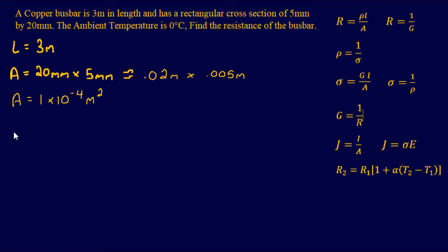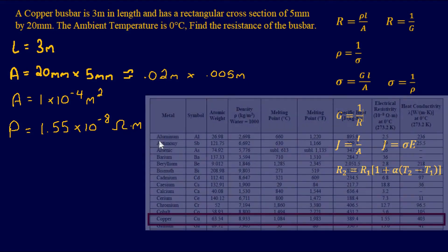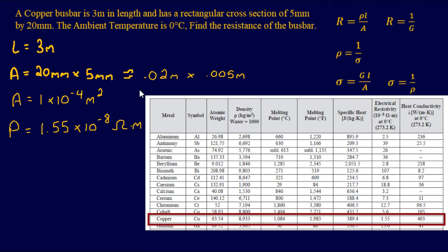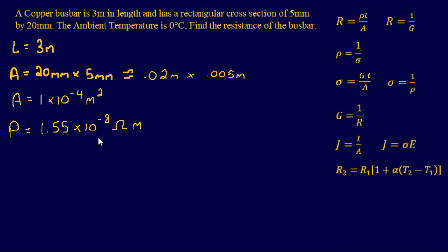From the FE manual, we find that the resistivity of copper at 0 degrees Celsius is 1.55×10⁻⁸ ohm-meters. Just to give you a heads up, resistivity may be given in most of your problems because it's not always the same from book to book — it's very close but not always the same. So this is usually given, but for now I referred to the FE handbook to get this particular value.